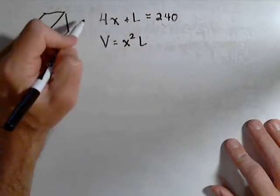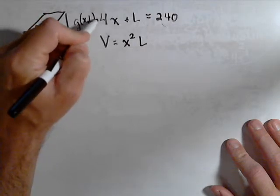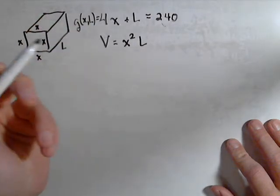We want to maximize this subject to this constraint. So let's call this guy g of x comma L here, and that'll be v of x L.